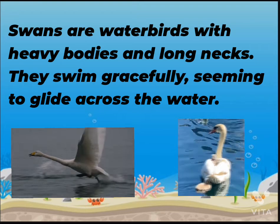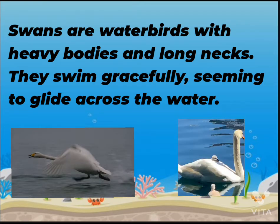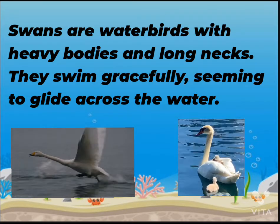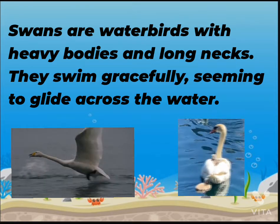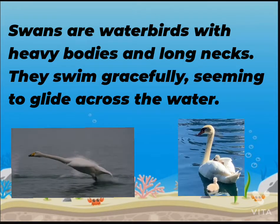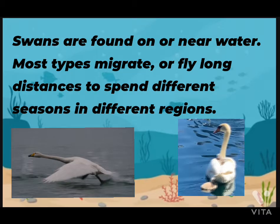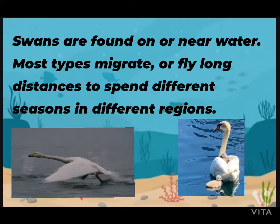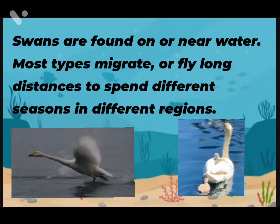Number one: Swans. Swans are water birds — children, we all know this. Swans are water birds with heavy bodies and long necks. They swim gracefully, seeming to glide across the water. Swans are found on or near water. Most types migrate, or fly long distances, to spend different seasons in different regions.